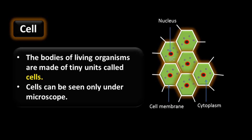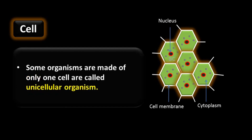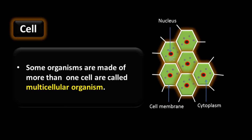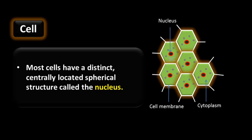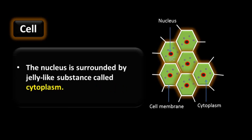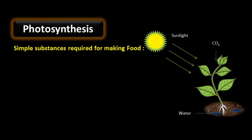Cells can be seen only under a microscope. Some organisms made of only one cell are called unicellular organisms; some organisms made of more than one cell are called multicellular organisms. The cell is enclosed by an outer boundary called the cell membrane. Most cells have a distinct, centrally located spherical structure called the nucleus, surrounded by a jelly-like substance called cytoplasm.